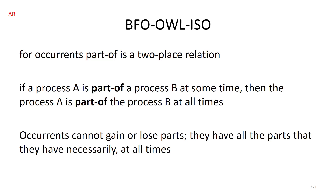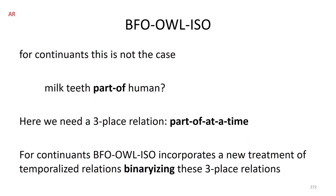For part-of relations between continuants we need three-place relations: A part of B at T. OWL does not allow three-place relations, so how do we deal with this? And how do we deal with it in such a way that we can handle generic parthood, as in the milk teeth example? Milk teeth are part of a human only at a certain time in the life of the human, and we want to capture that.